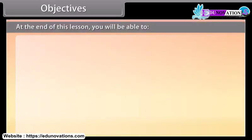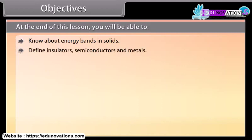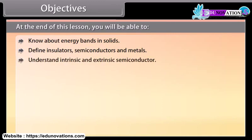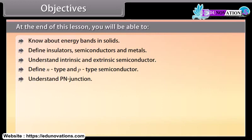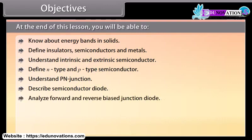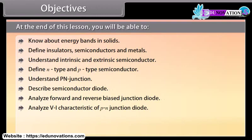At the end of this lesson, you will be able to: know about energy bands in solids; define insulators, semiconductors and metals; understand intrinsic and extrinsic semiconductors; define N-type and P-type semiconductors; understand P-N junction; describe semiconductor diode; analyze forward and reverse biased junction diode; analyze V-I characteristics of P-N junction diode; define rectifier; and explain Zener diode.